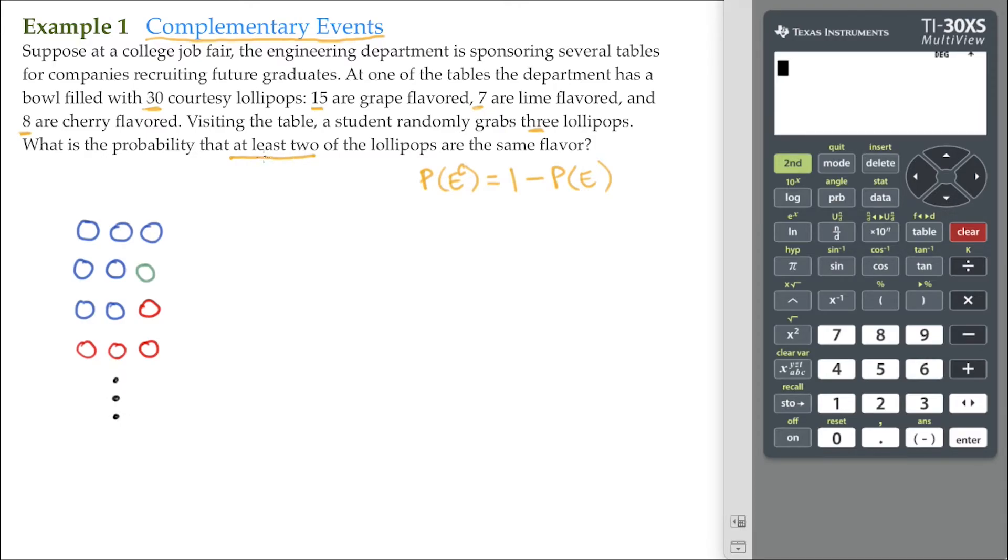However, the complement to at least two of the lollipops are the same flavor, the complement to this is none are the same flavor. And what would that look like? Well, that must mean that one of them has got to be grape, one of them has got to be lime, and one of them has got to be cherry. That's the only possible way that that can occur.